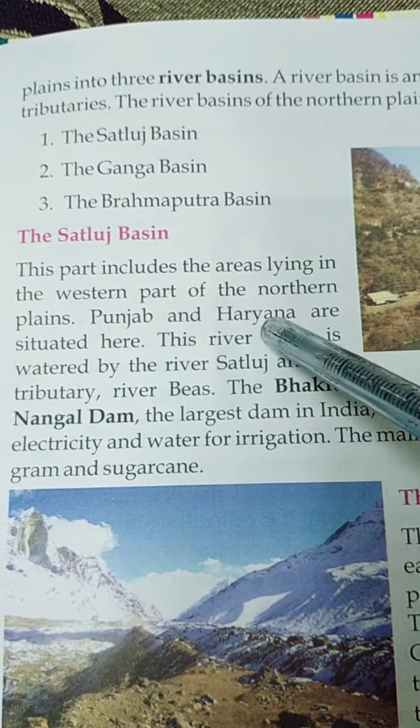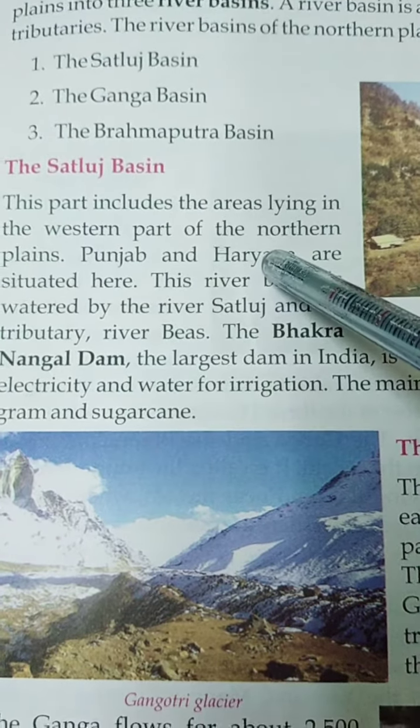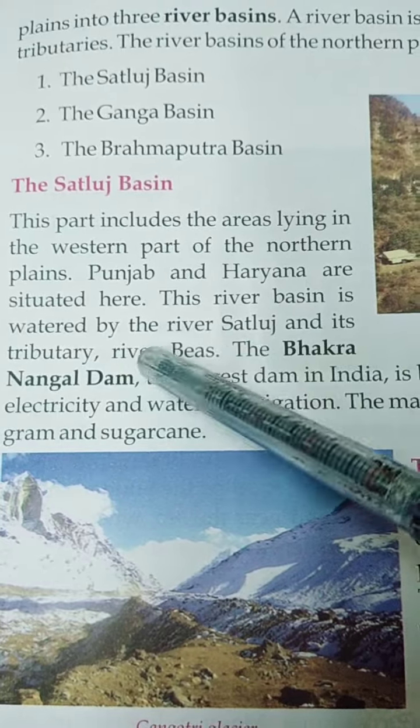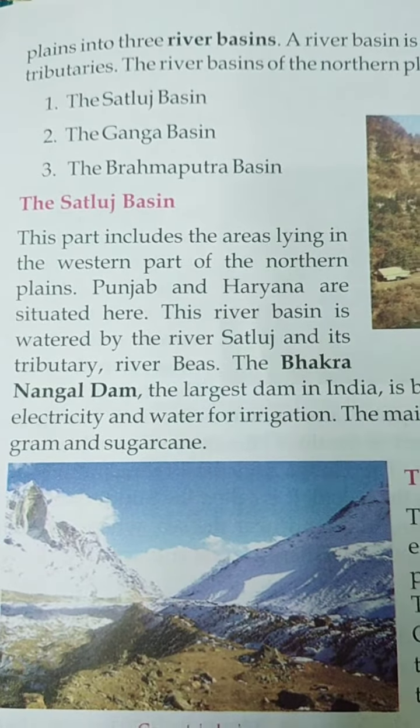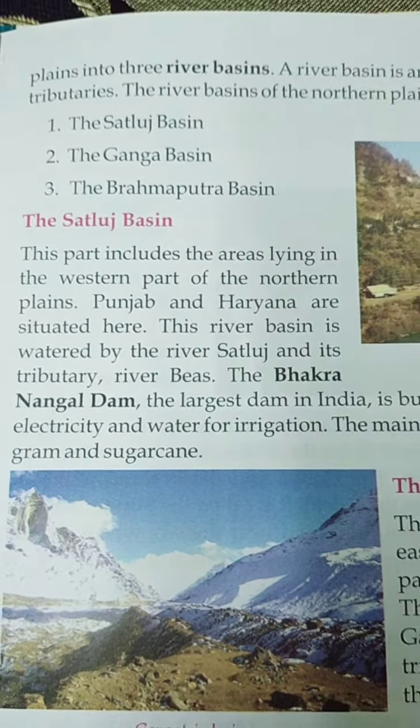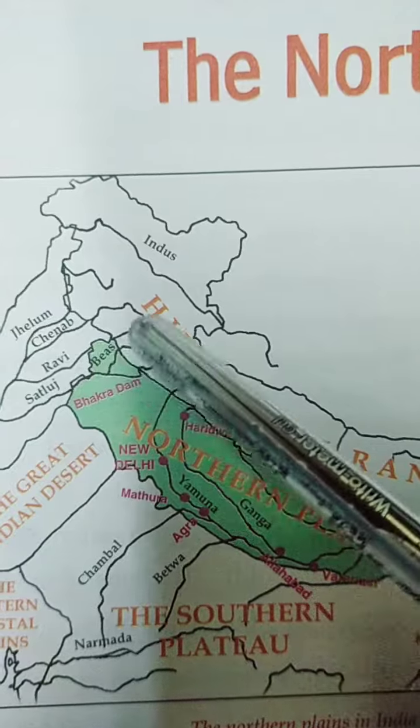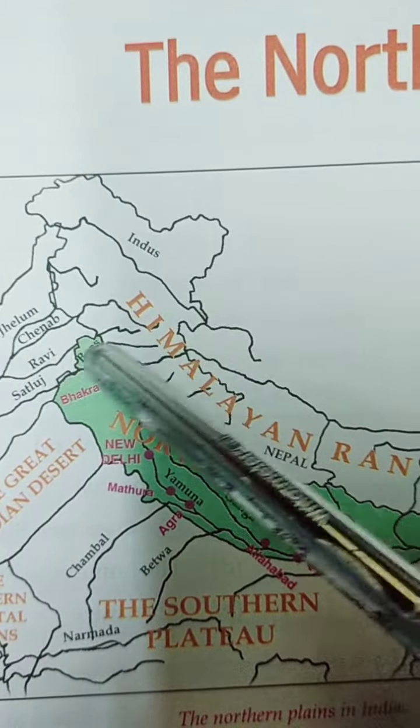The part watered by the Satluj river is called the Satluj Basin. This includes the areas lying in the western part of the northern plains. So this is the northern plains — its eastern parts and its western parts. This part is the Satluj plain. Punjab and Haryana are situated here; these two states come under the Satluj Basin.